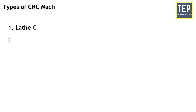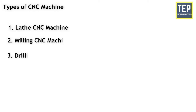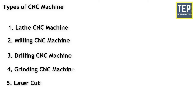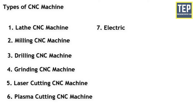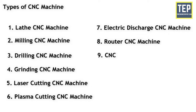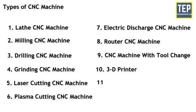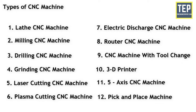The various types of CNC machines are: 1. Lathe CNC machine, 2. Milling CNC machine, 3. Drilling CNC machine, 4. Grinding CNC machine, 5. Laser cutting CNC machine, 6. Plasma cutting CNC machine, 7. Electric discharge CNC machine, 8. Router CNC machine, 9. CNC machine with automatic tool changes, 10. 3D printer, 11. 5-axis CNC machine, and 12. Pick and place machine.